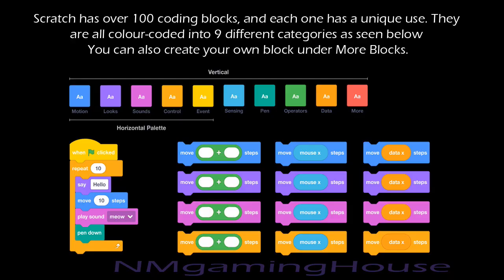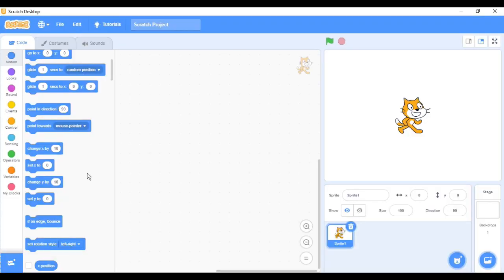As mentioned earlier, Scratch is a block-based visual programming language, and there are nine different block categories. Today we are mainly using the control blocks for creating the small security alarm. So let's start making the security system.